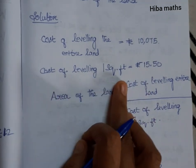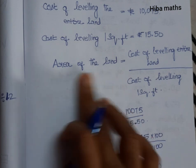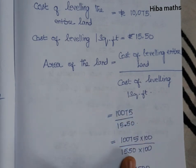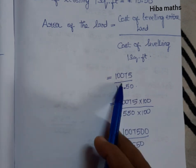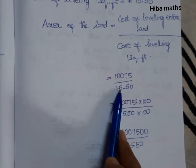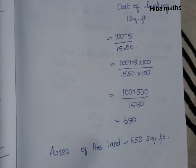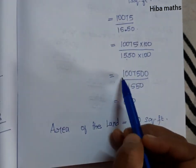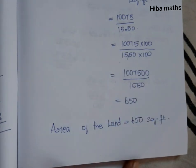Cost of leveling per square feet is Rs. 50.50. Area of land equals cost of leveling the entire land divided by cost of leveling 1 square feet. That is Rs. 10,075 divided by Rs. 50.50.